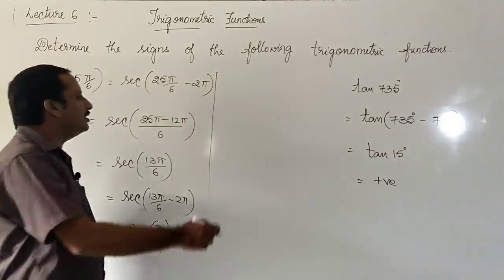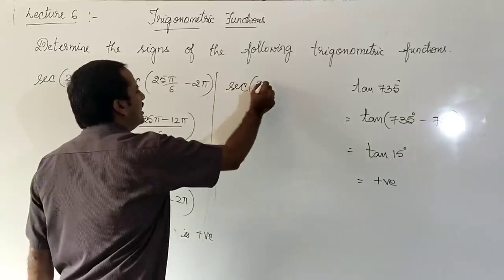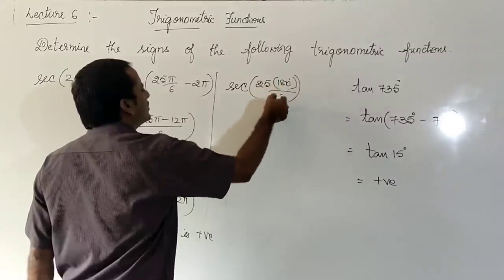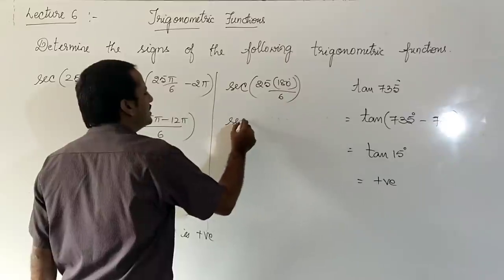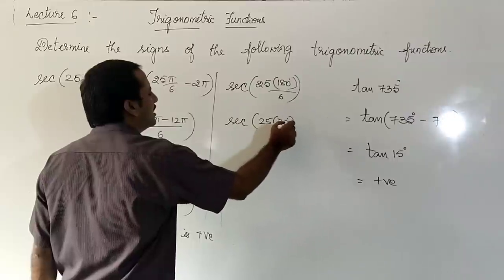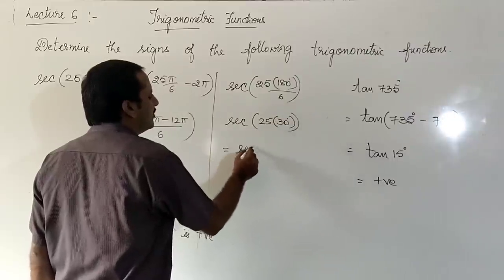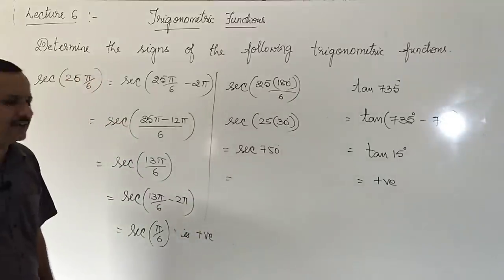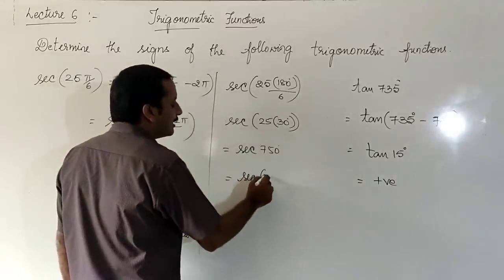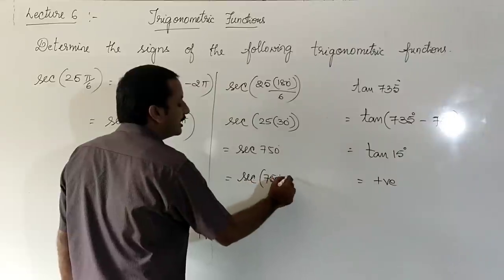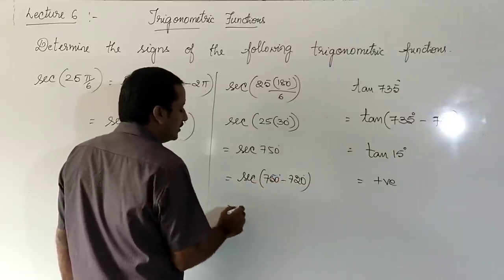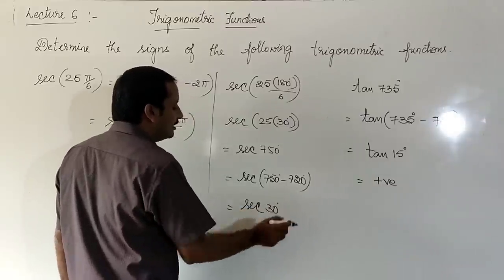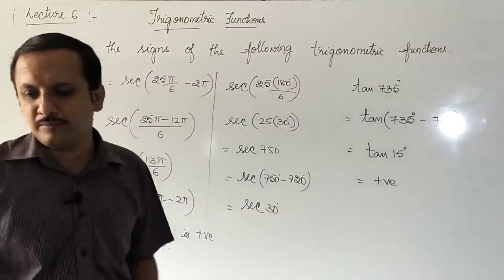Using degrees: 25π/6 with π = 180° gives 25 × 30 = 750 degrees. 750 − 720 = 30 degrees. Secant 30 degrees is in the first quadrant — positive.